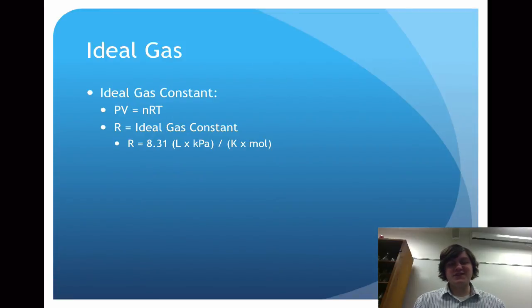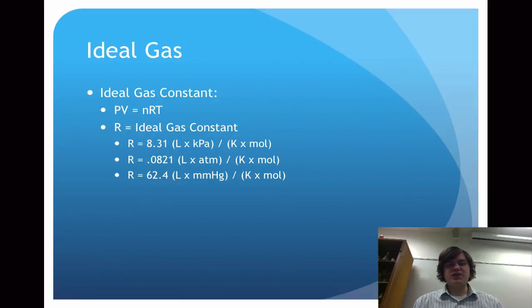And this is a little bit of a clunky unit, but this should be written in with R. And you can see that the pressure being considered here is kilopascal. So if your problem calls for kilopascals, we will use 8.31. 0.0821 is for atmospheres, and 62.4 is for millimeters of mercury.